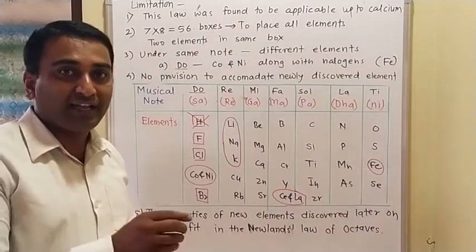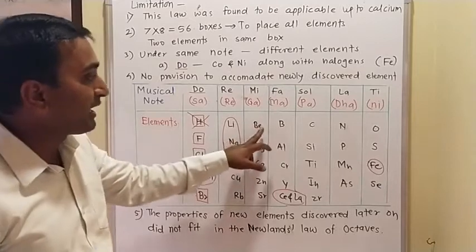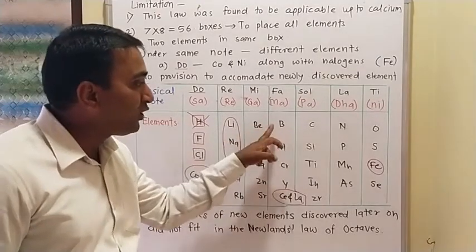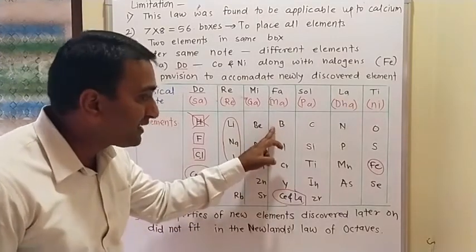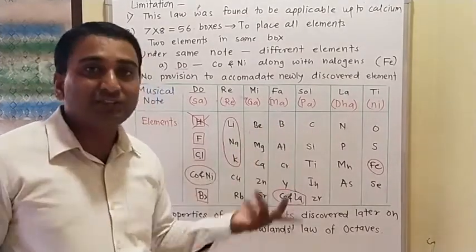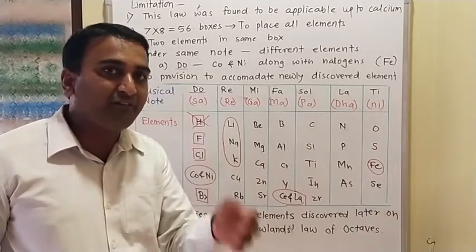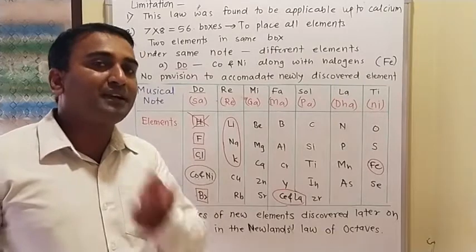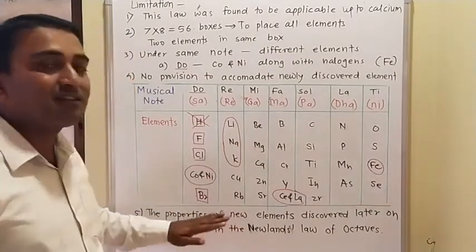An important point: the properties of new elements discovered later did not fit into Newland's Law of Octaves. If a new element is placed between existing elements, all the numbering changes and every 8th element would no longer have similar properties to the first. This is another key limitation of Newland's classification.